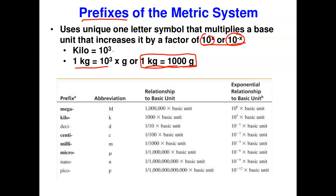Important metric prefixes you need to know: mega means one million (10⁶), kilo means a thousand times the base unit, deci is 10⁻¹, centi is 10⁻², milli is 10⁻³. You are responsible for memorizing from mega down to nano. The metric prefixes will not be given on exams — you must memorize them.